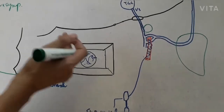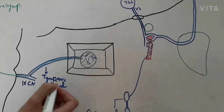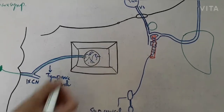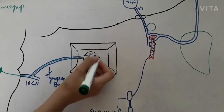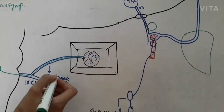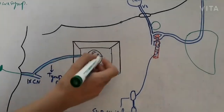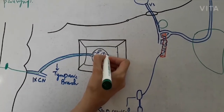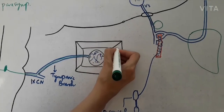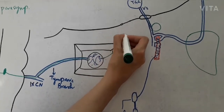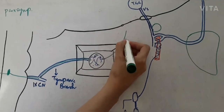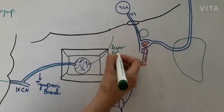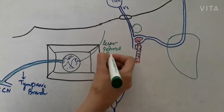Those parasympathetic secretomotor fibres had to go to the parotid gland. Having reached the tympanic plexus, they leave it and continue as a new branch called the lesser petrosal nerve.